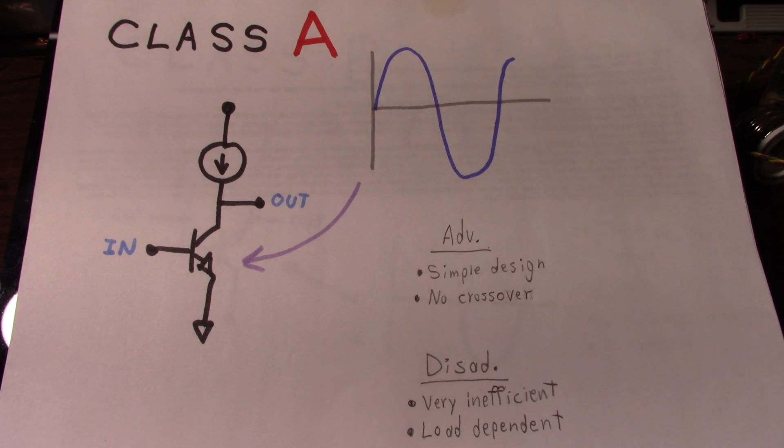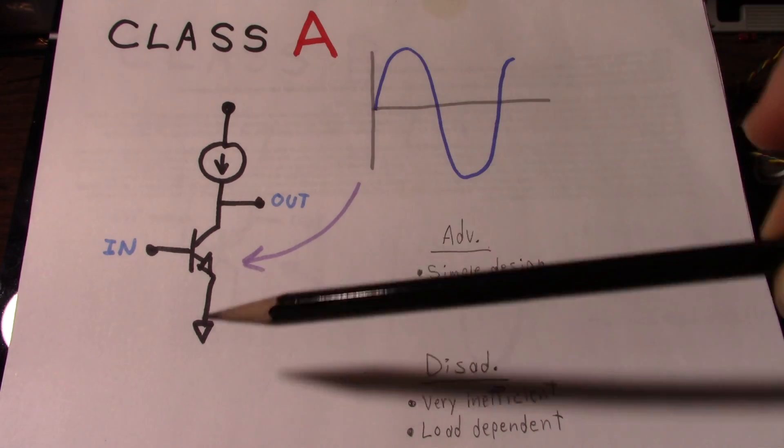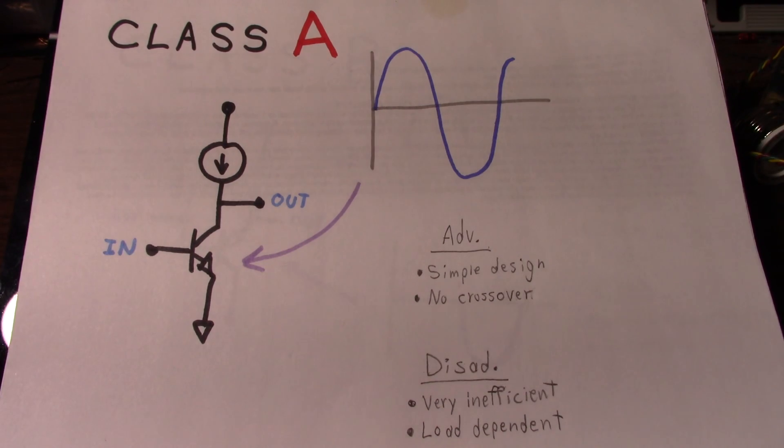The power supply has to be designed for continuous draw. Typical efficiency of the class A amplifier is going to be around 25%. Often it will be quite a bit less. Now there are some designs that can make it higher than that, but usually you're going to see it somewhat less.